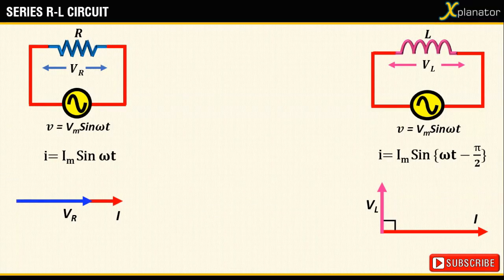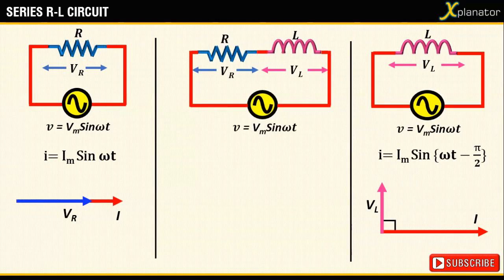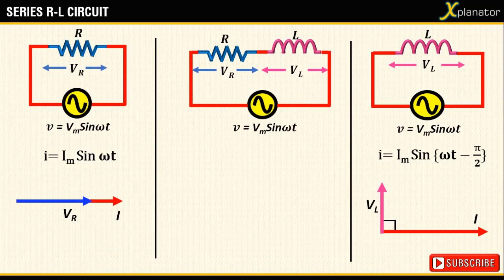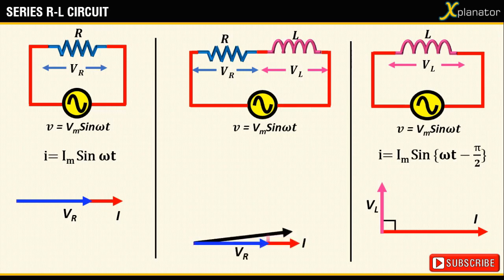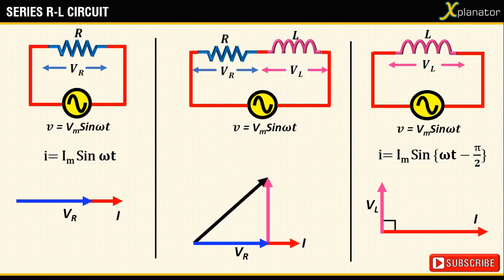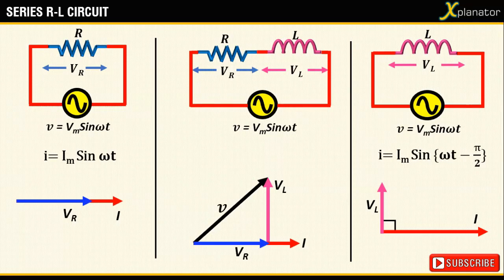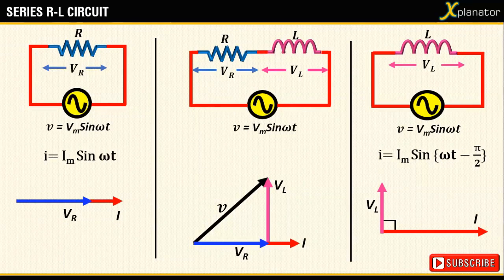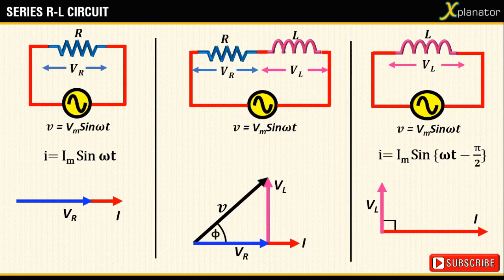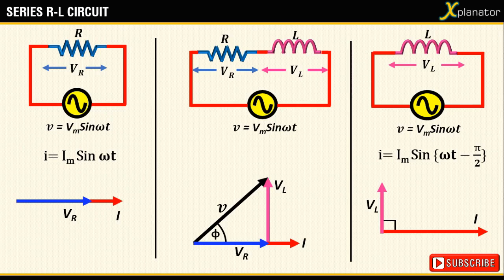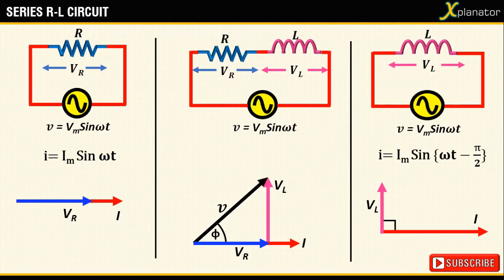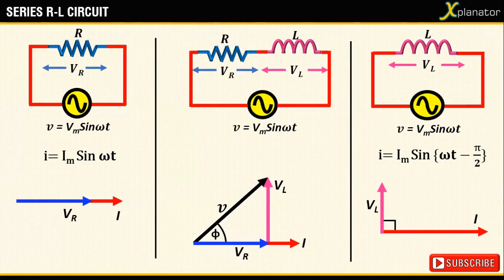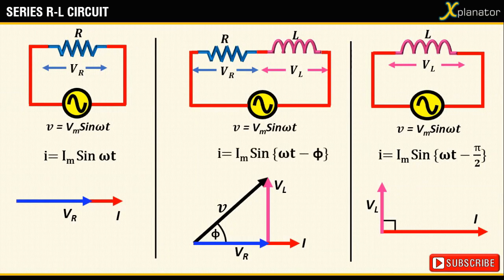Now when you combine both the elements together in a circuit, the current and the voltage will have a phase difference somewhere between 0 and 90 degrees. We don't know the value yet, so we can call it some angle phi whose value will be determined in the coming stages. With this assumption, we can write the equation for current I as I equals Im sin (omega t minus phi).